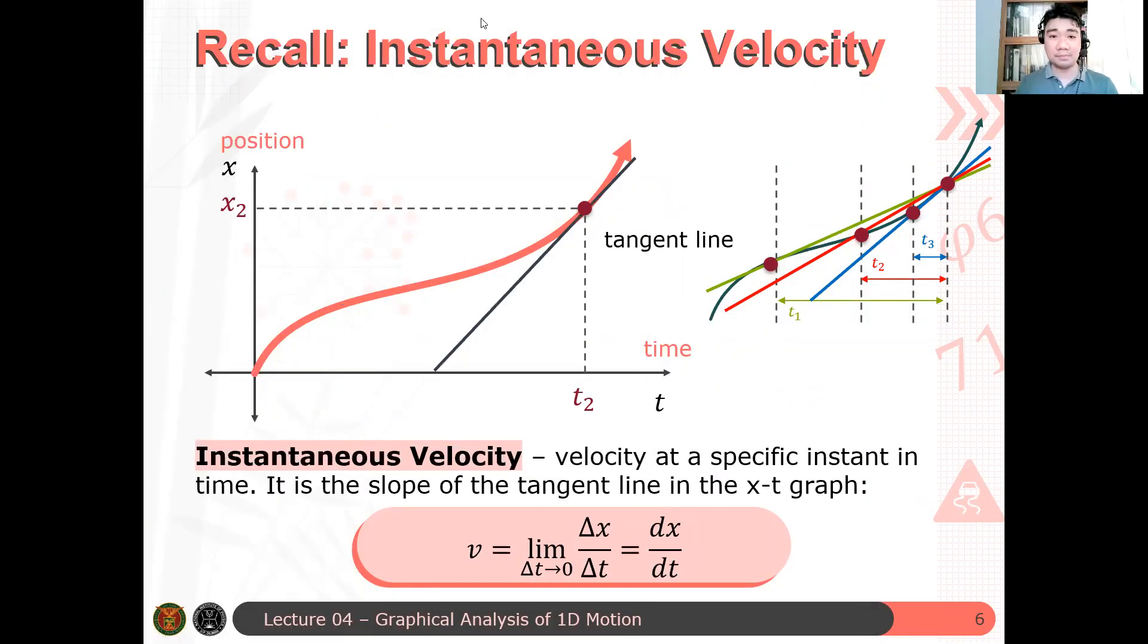So recall also our instantaneous velocity. Kanina, we have our secant line. And then if we approach one of the points towards the other point, what we will get is the limit of the quotient of the displacement per unit time. And that will give us the slope of the tangent line about that point. And the slope of the tangent line about that point, in a more physical sense, it's your instantaneous velocity. We will explain more on the instantaneous velocity later. Ano yung relationship ng instantaneous velocity kay average velocity for some special graphs, they're equal, for example.